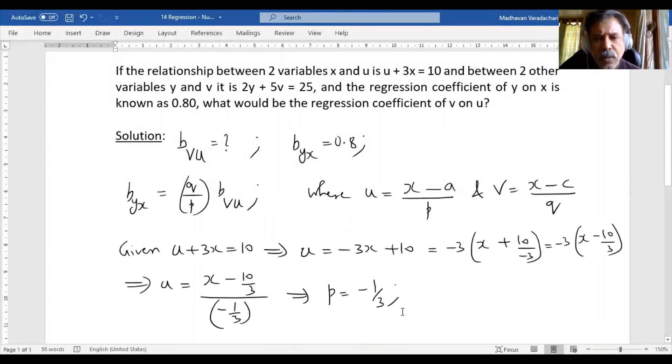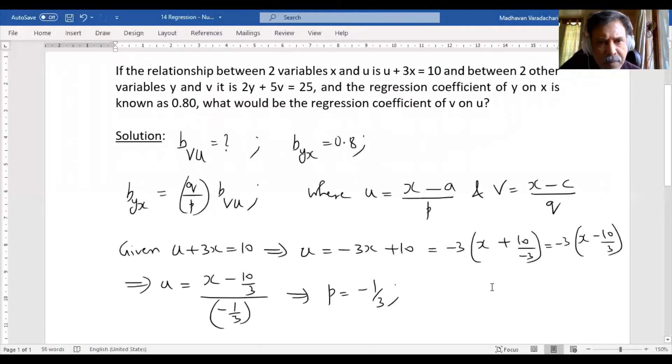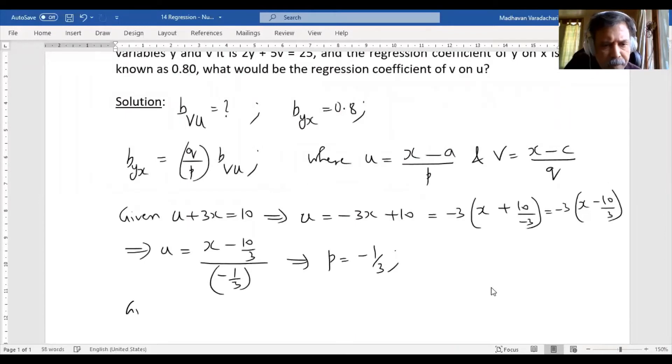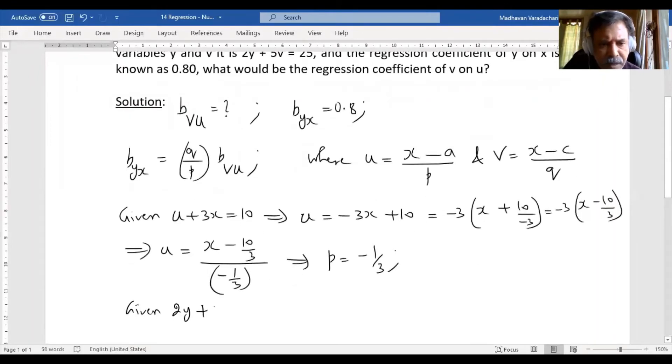Same way, let us do the other one. Given 2y plus 5v equal to 25, so 5v equal to minus 2y plus 25.